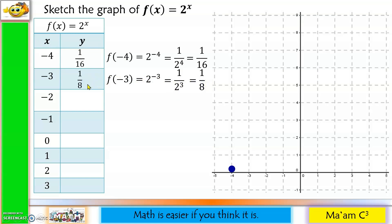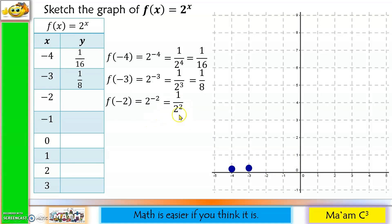For negative 2: f(-2) = 2 raised to negative 2, which becomes 1 over 2 squared. Since 2 squared is 4, we have 1 fourth. We plot negative 2 at 1 fourth by dividing 1 unit into 4 equal parts, placing the point at the first division.